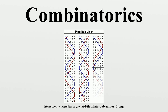Combinatorial aspects of dynamical systems is another emerging field, where dynamical systems can be defined on combinatorial objects — see for example graph dynamical systems. There are also increasing interactions between combinatorics and physics, particularly statistical physics. Examples include an exact solution of the Ising model, and a connection between the Potts model on one hand, and the chromatic and Tutte polynomials on the other hand.